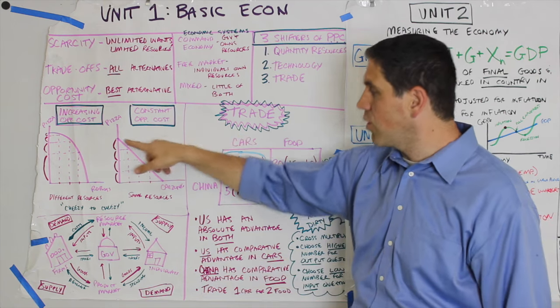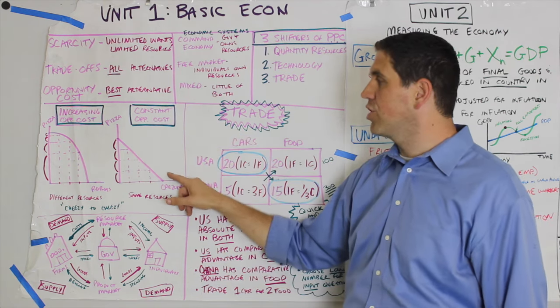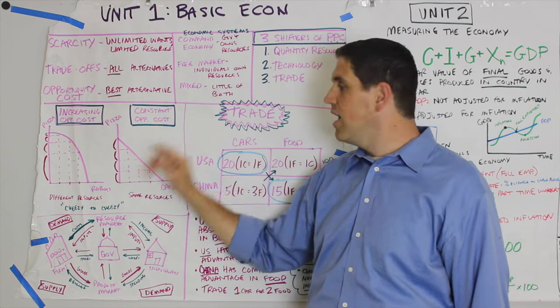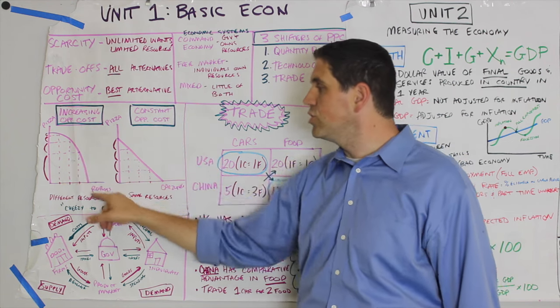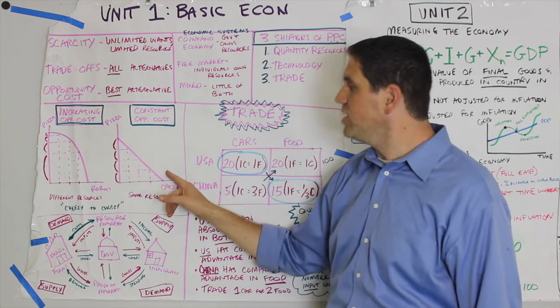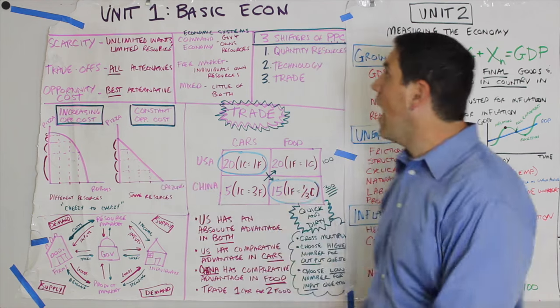A constant or straight-line production possibilities curve shows constant opportunity cost. This one — the resources produced in two products are completely different. And this one — the resources are very similar.